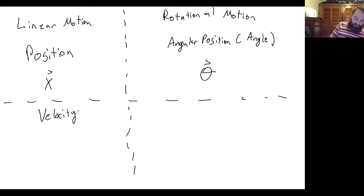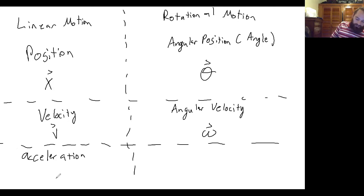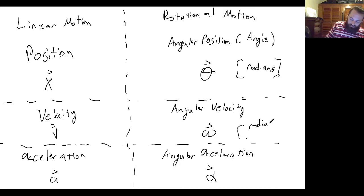And then we have acceleration, and so we also have angular acceleration which we denote as alpha. And so the units for this are radians, and then radians per second, and then radians per second squared.